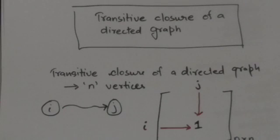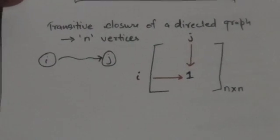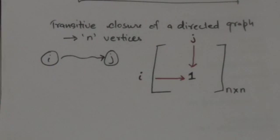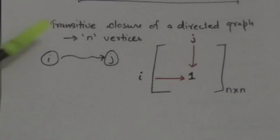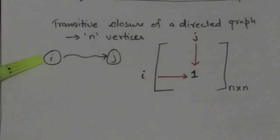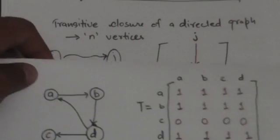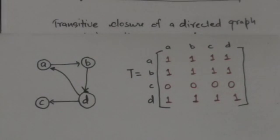Welcome back. In this tutorial we will study the transitive closure of a directed graph. The transitive closure of a directed graph with n vertices is a matrix of order n by n, in which the element at the ith row and jth column is 1 if there exists a directed path of positive length from the ith vertex to the jth vertex; otherwise it will be 0. It will be more clear after this example.